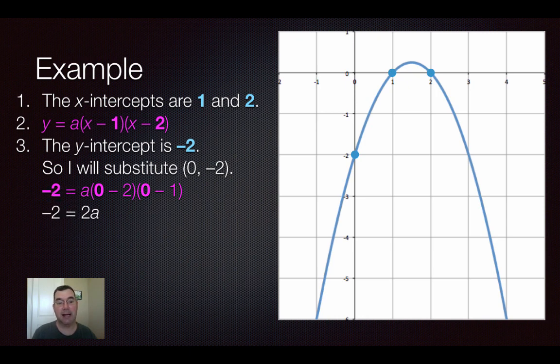Simplifying the left-hand side gives me negative 2, nothing to simplify there, but simplifying the right-hand side gives me 2a. So if 2a is equal to negative 2, that means that a is equal to negative 1. And now I can finish writing my equation in root form, which is y equals negative 1 times x minus 1 times x minus 2.